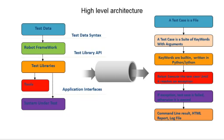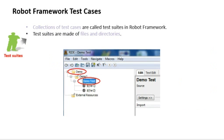A test case is a file, and that file is called a suite. A test suite can have any number of test cases. A test case consists of keywords, and keywords are called with arguments. Keywords are inbuilt, user-defined, or can be written in Python or Jython. Robot Framework will execute the test case until it reaches an exception — if an exception occurs it will fail the test case, otherwise it will pass and generate an HTML report and command line result.